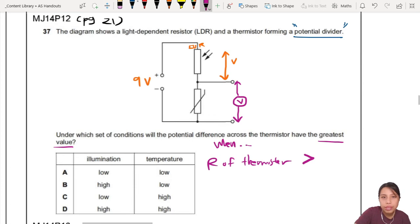The resistance of your LDR. This is the first important hint. Your R of thermistor must be much bigger compared to your R of LDR.